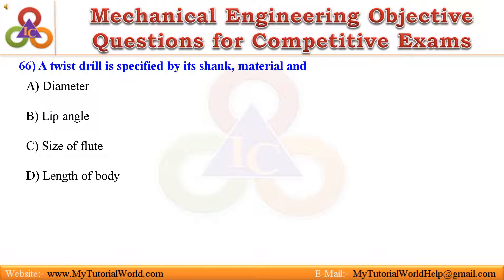66. A twist drill is specified and identified by its shank, material, and: A. Diameter, B. Lip angle, C. Size of flute, D. Length of body. Answer is Diameter.